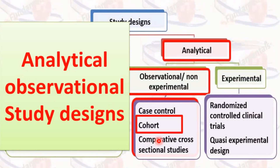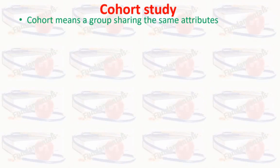In the previous session I discussed the case-control study. Today I am going to discuss the cohort study. Cohort study is a type of analytical study, and among analytical studies it is an observational or non-experimental study. In cohort study, the cohort means a group of people sharing the same attributes or characteristics — for example, all those who are exposed to the use of tobacco as compared to those not exposed.